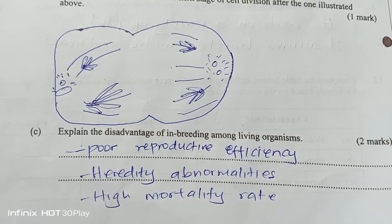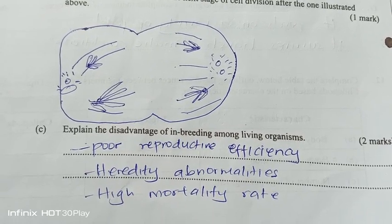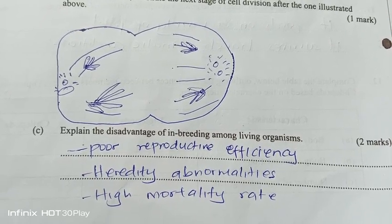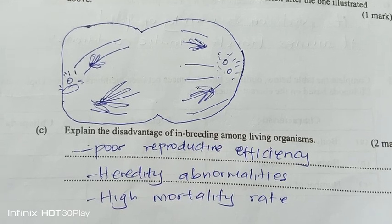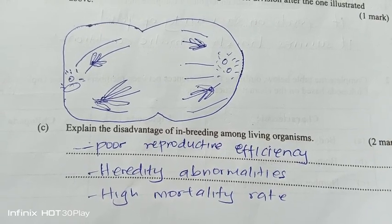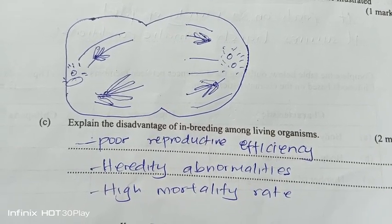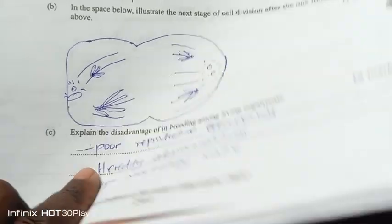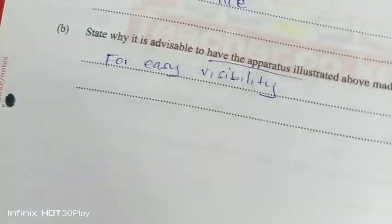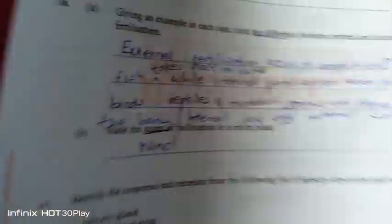Explain the disadvantages of inbreeding among living organisms. It leads to poor reproductive efficiency. It may lead to hereditary abnormalities and also a high mortality rate.